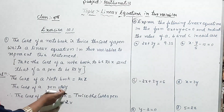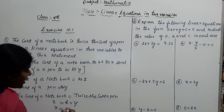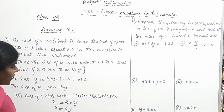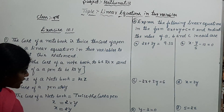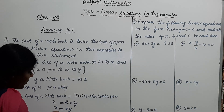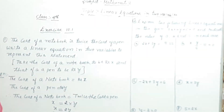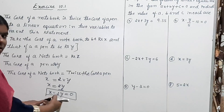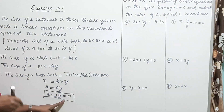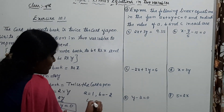x is equal to 2 into y, which gives x = 2y. Transferring 2y to the left-hand side gives x minus 2y = 0. Now comparing with the standard form: the A value is 1, the B value is minus 2, and the C value is 0.